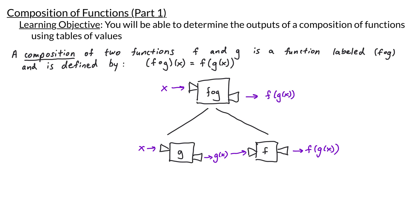So again, if I plug anything into this composition, the input first goes into the g function and g will perform some operations and give us some output. That output then gets plugged into the f function. f will then perform some operations on that input and give us some output. This final output is the output of the composition of our two functions.